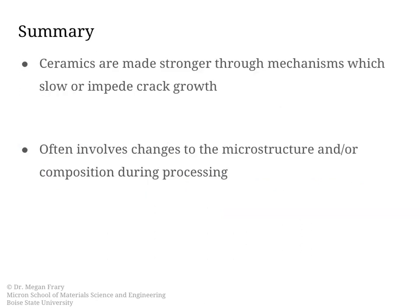To summarize: ceramics are toughened through a variety of different mechanisms, which all share the feature that they slow or impede crack growth. They do that by using up the energy that would otherwise be directed toward crack propagation. In all of these cases, this involves changes to the microstructure at the grain level and/or the composition, and this happens during processing. For ceramic materials, the processing route is very important and will ultimately drive the resulting structure and properties of the materials.